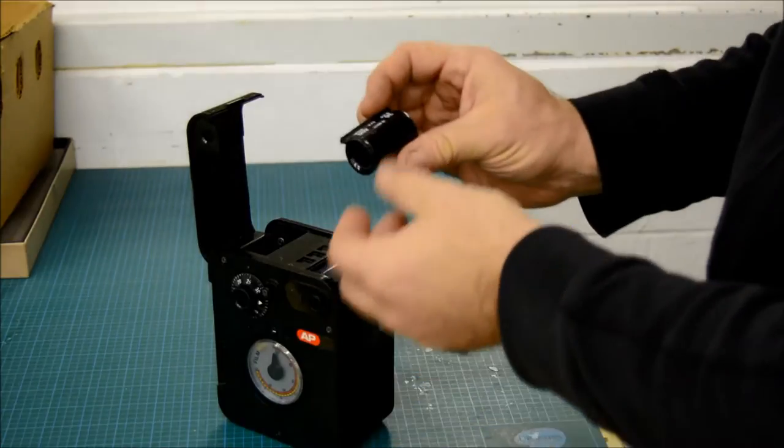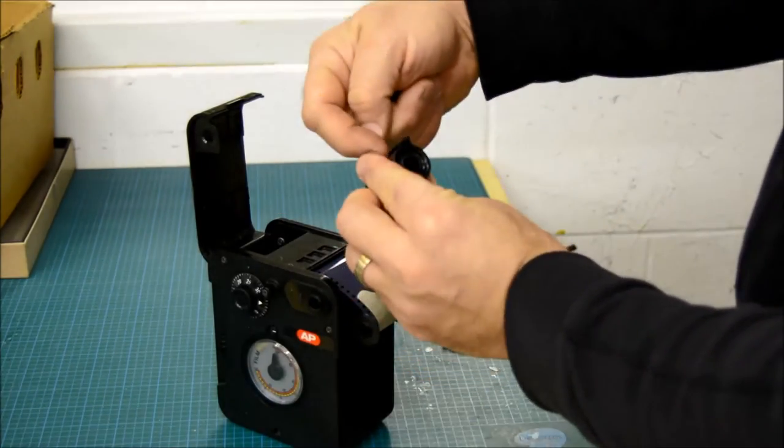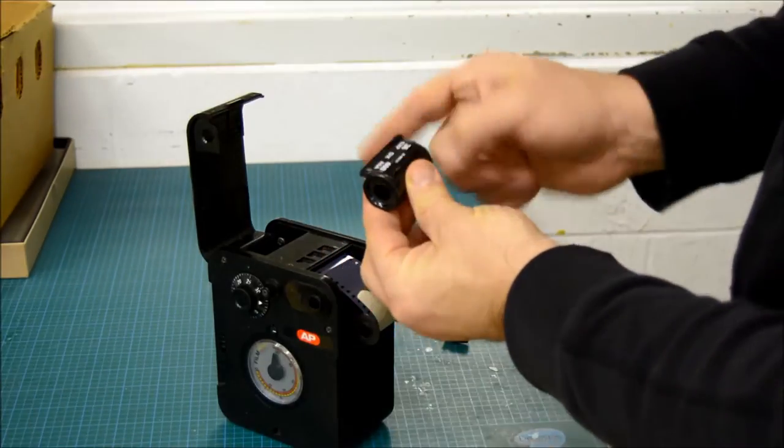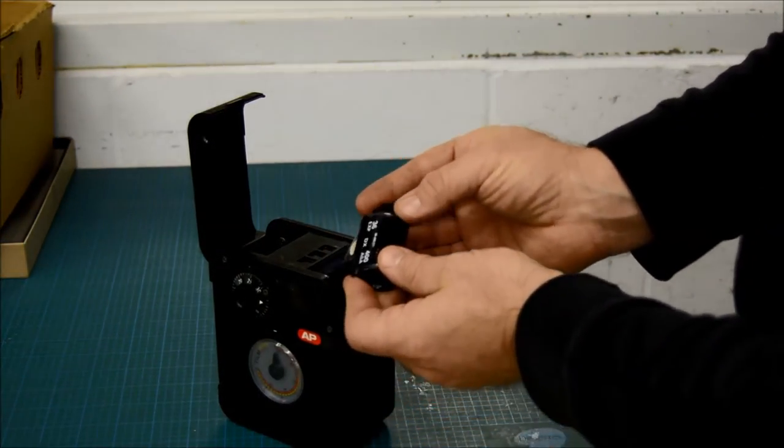Next, you take your film canister. The film canister has a flat part on the top and a not flat part over here. So the flat part to the top. And you slide it in. The film goes into the slot. And you slide that on.